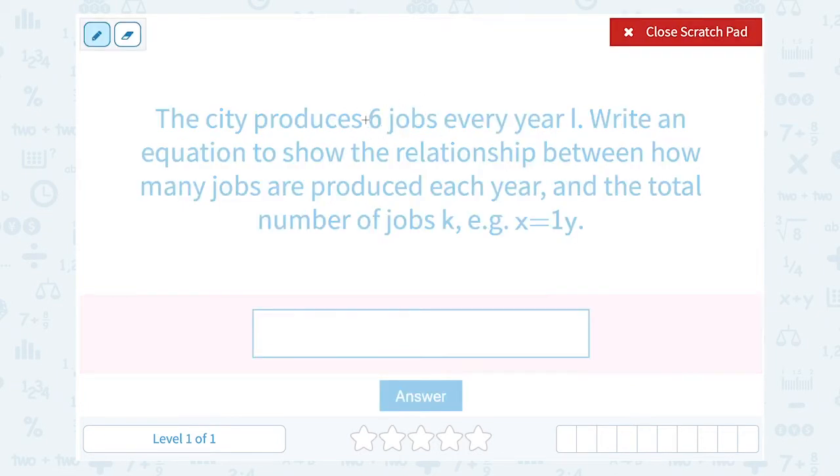Okay, well whenever you have a per year amount, that's going to be multiplied by the number of years, right? So if it's six jobs every year, meaning six jobs per year, and it's L years, that's going to be represented by six L.